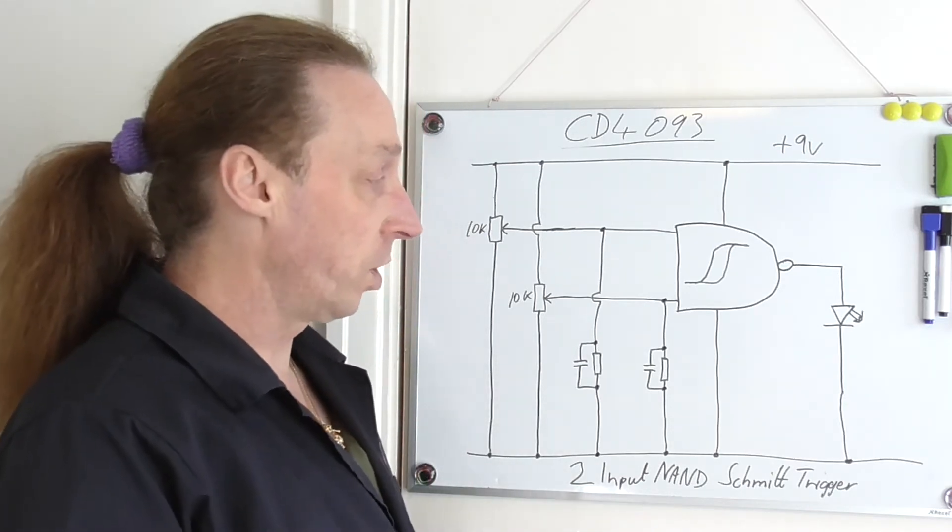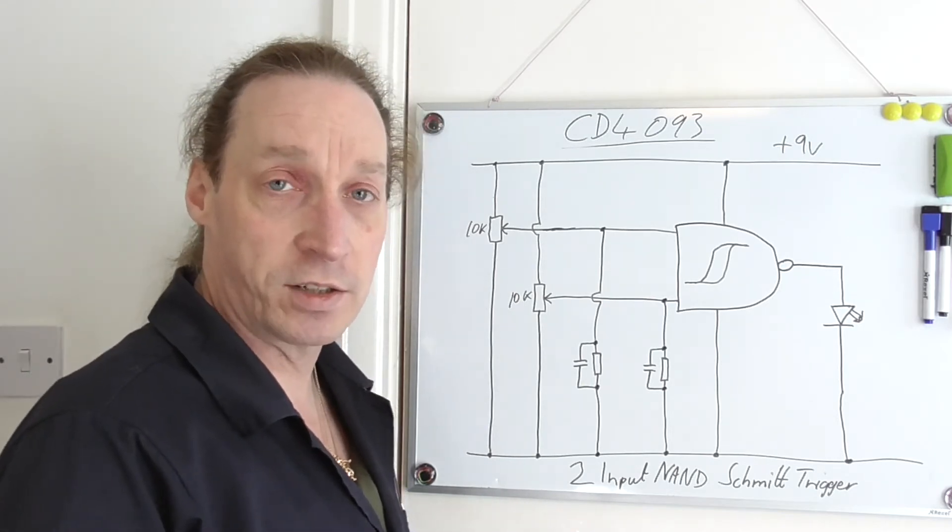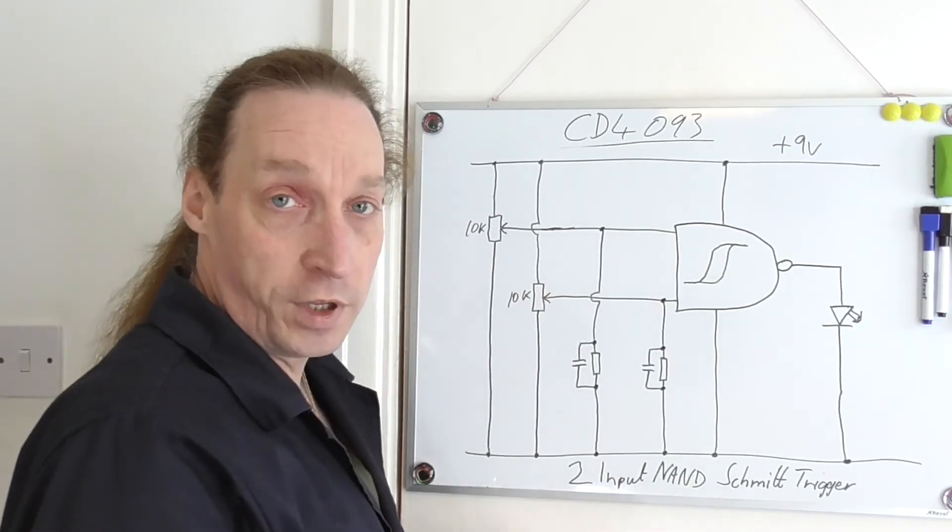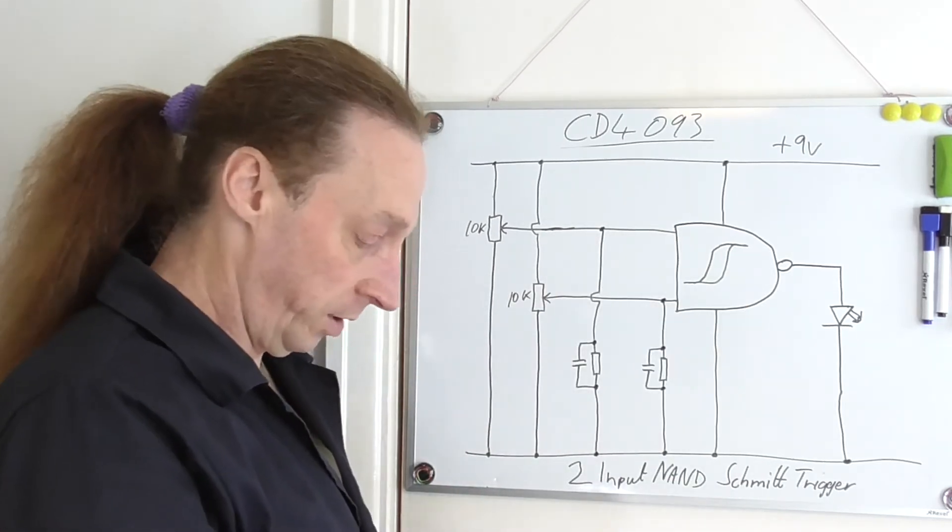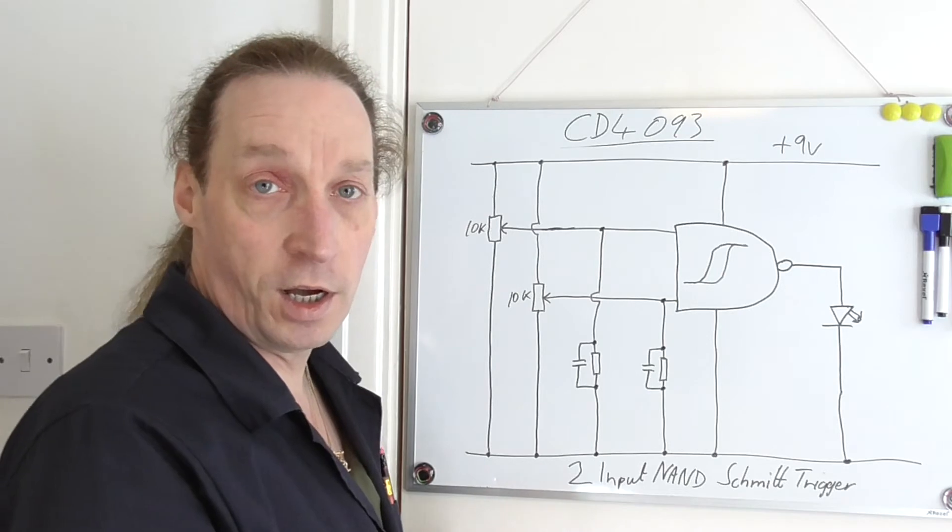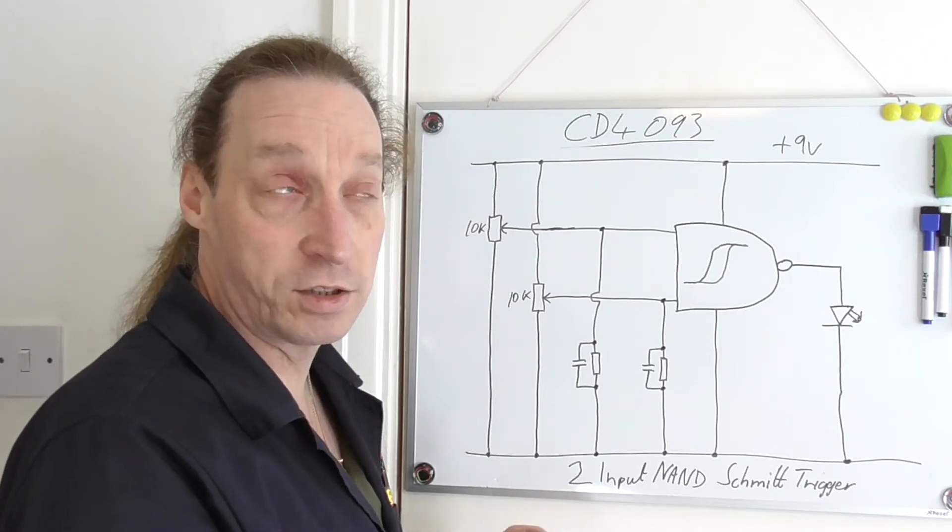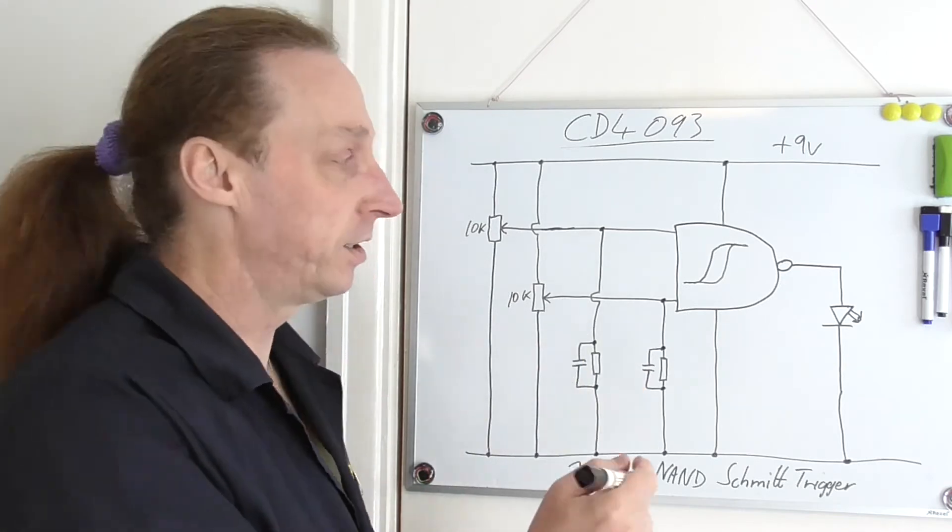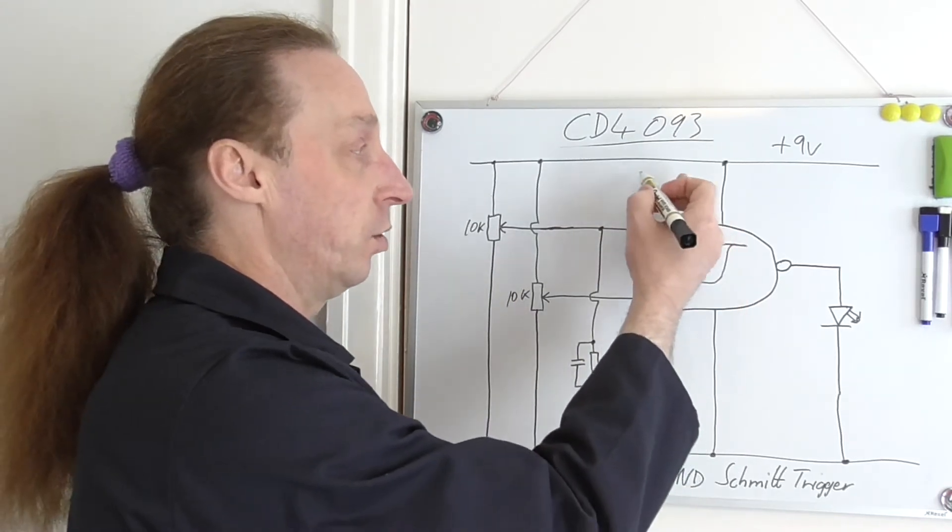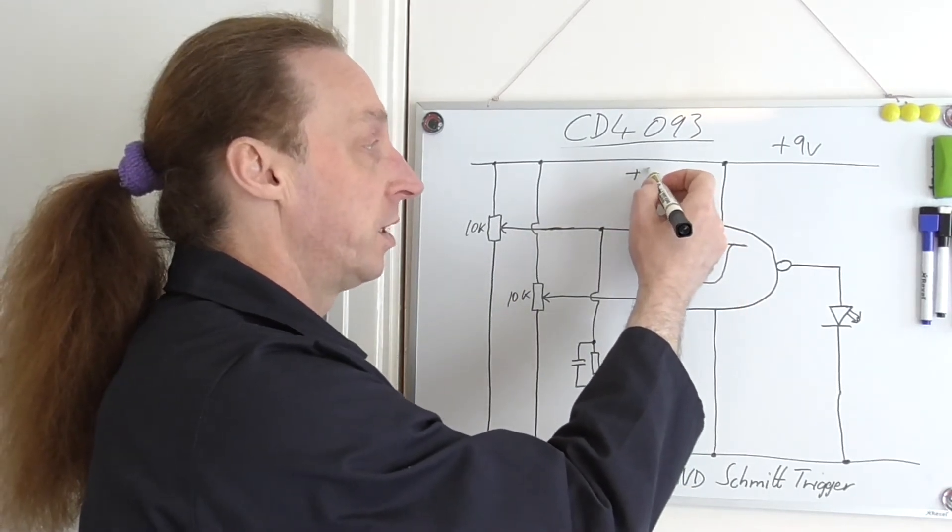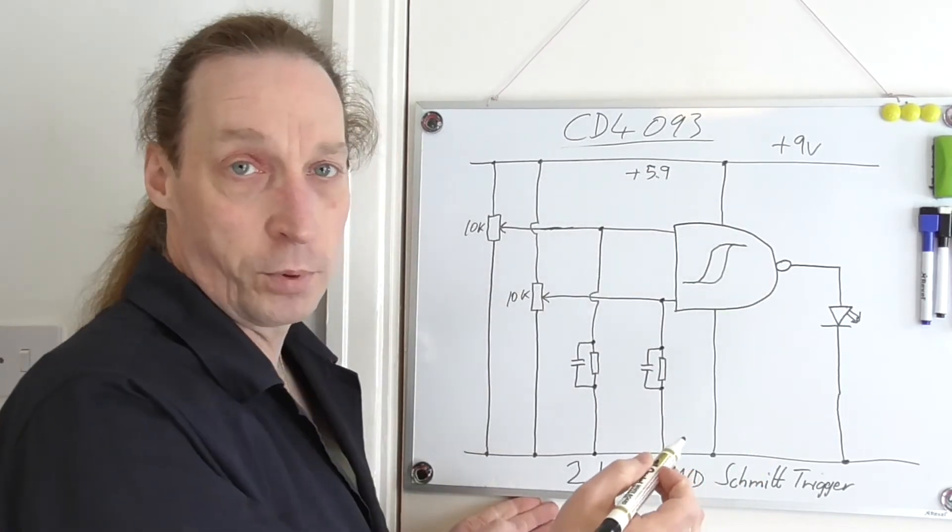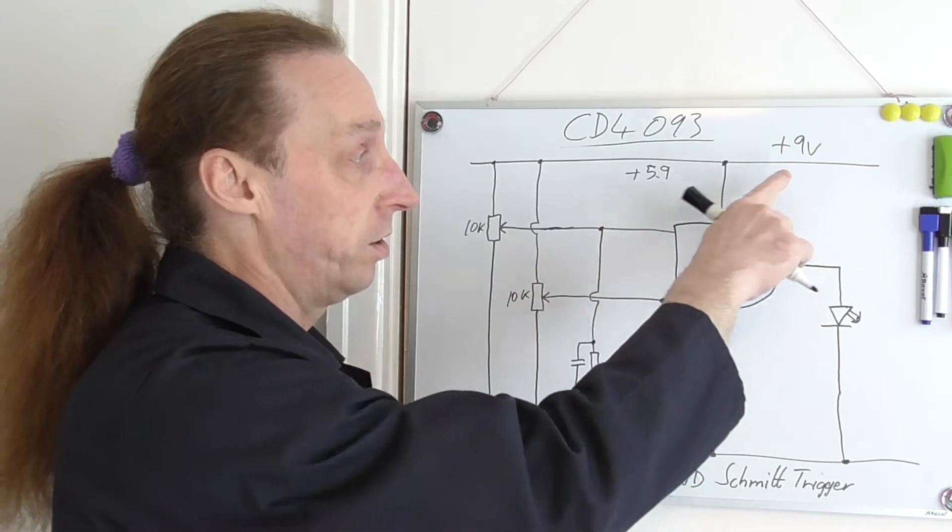What I've also got is, when I was looking at the datasheet, it's saying that the triggering points for the Schmidt trigger inputs, for it to detect that it's gone high, it has to get to plus about 5.9 if your source input voltage is about 9 volts.